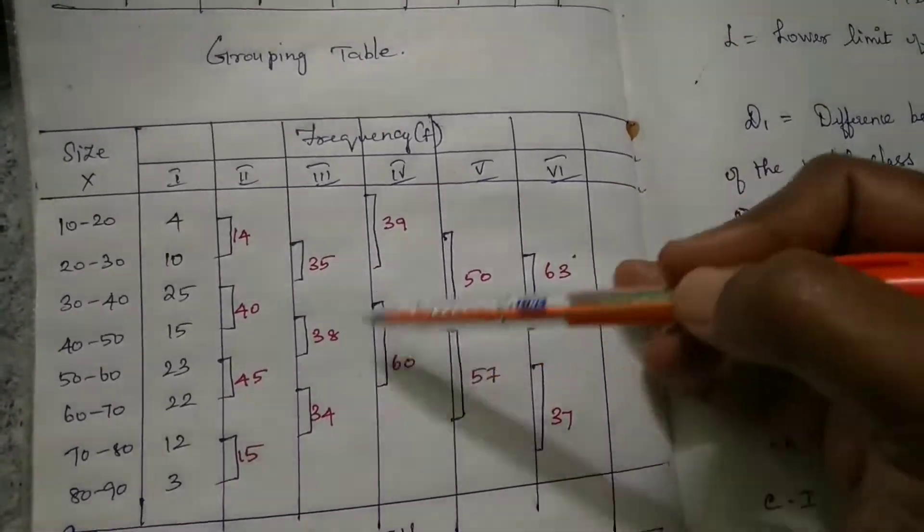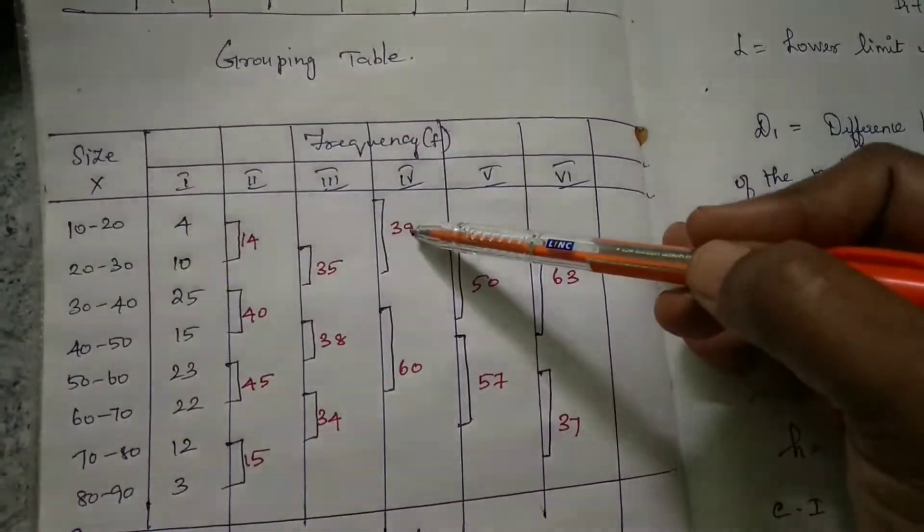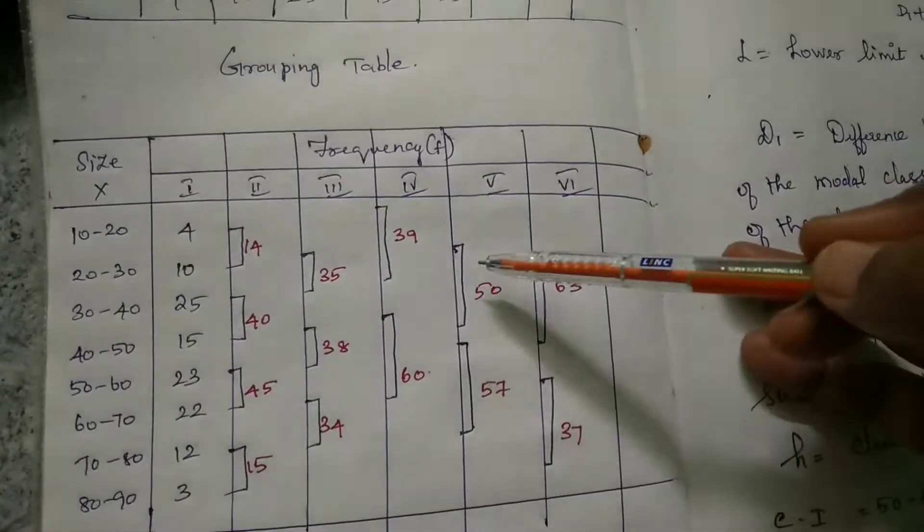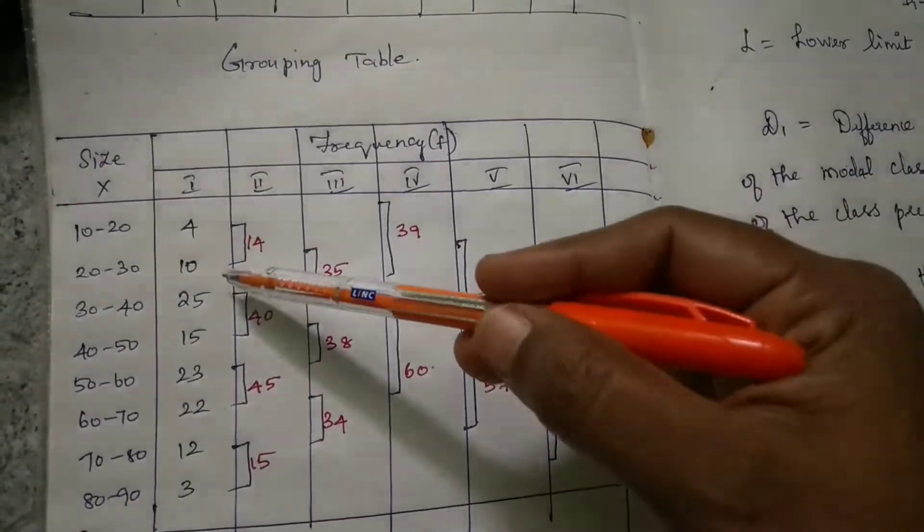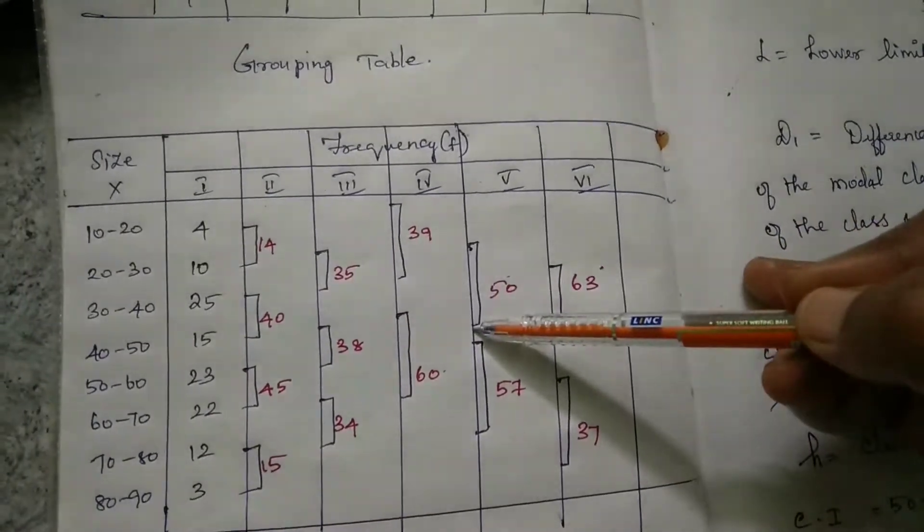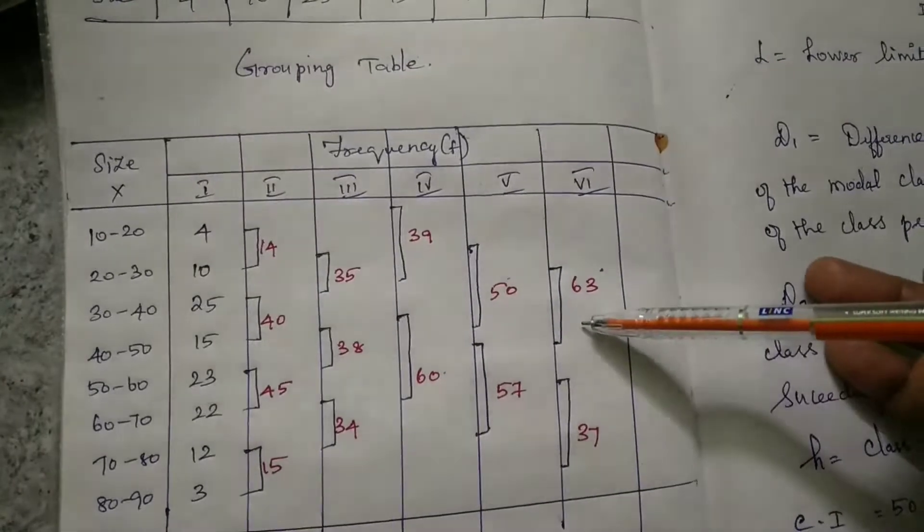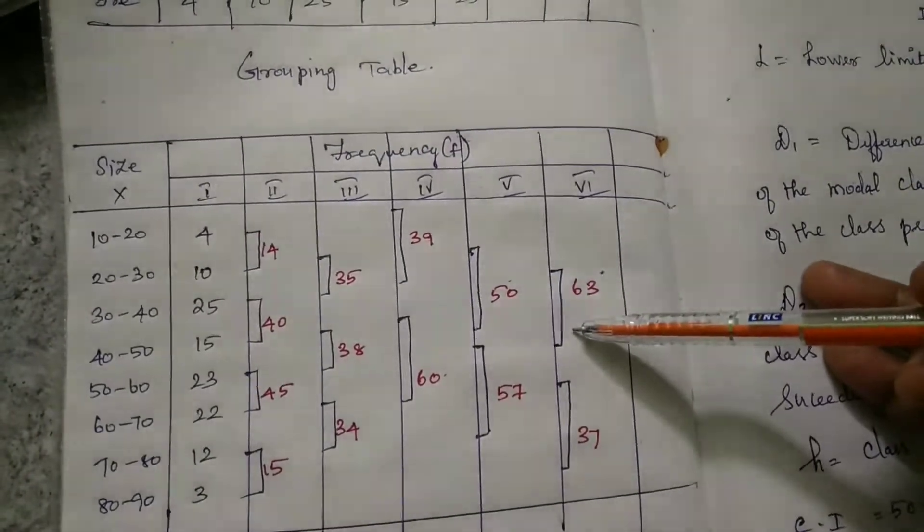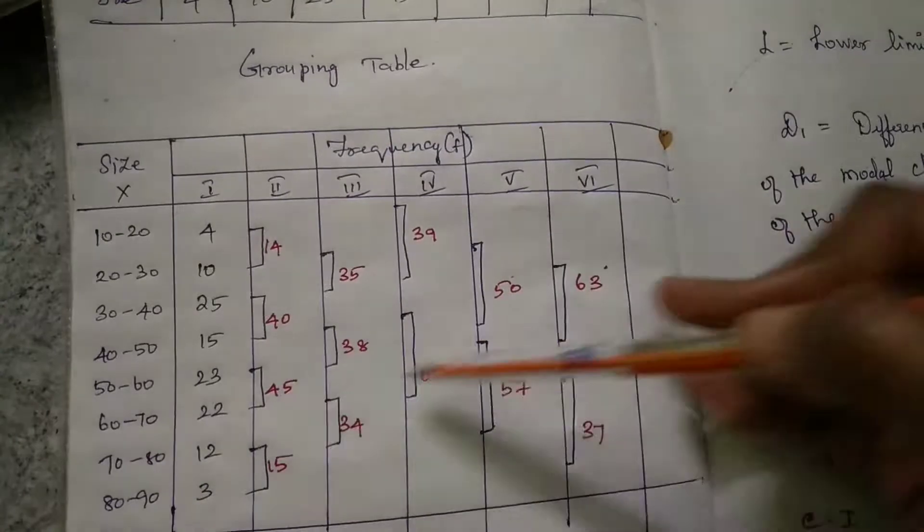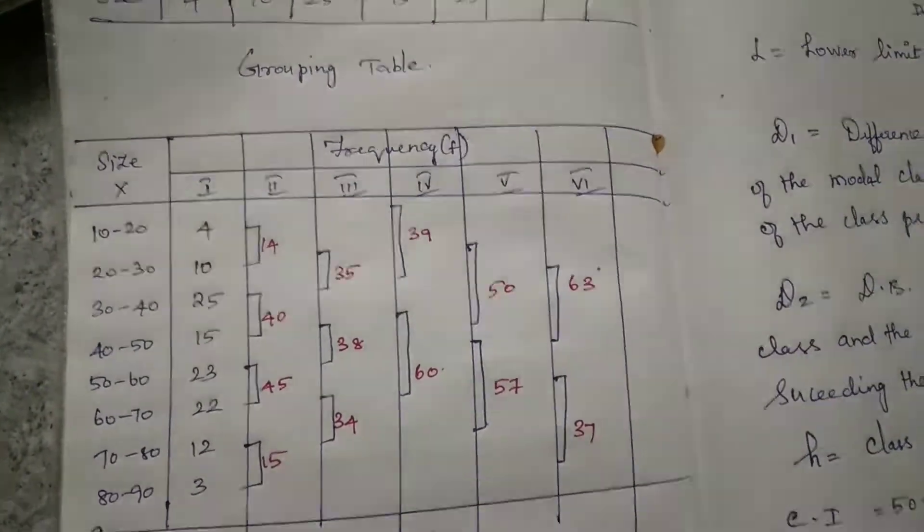Fourth column: add first three values, then next three values. Then fifth column: add second three values - that is 10, 25, 15, then next 23, 22, 12. And last column: add the next three values - that is 25, 15, 23, then remaining three values. So this is the grouping table.